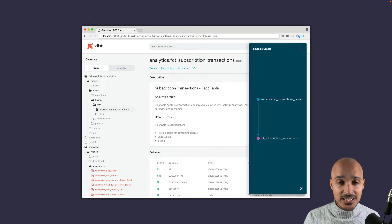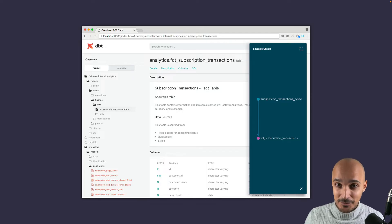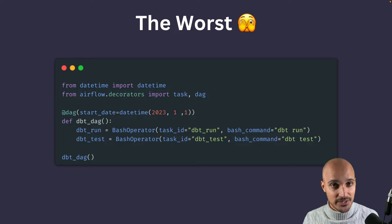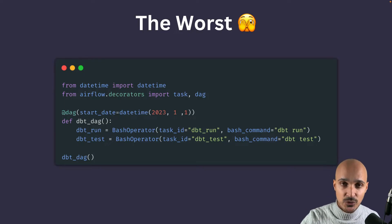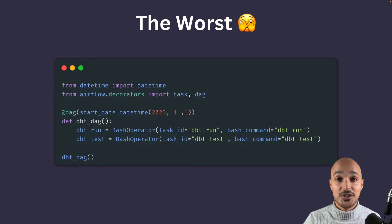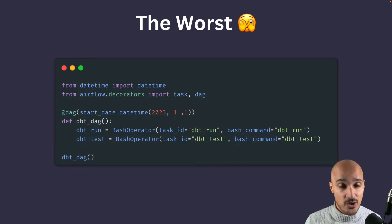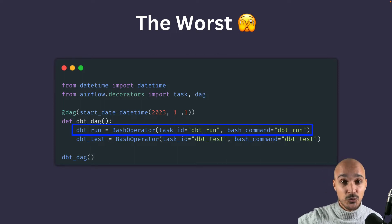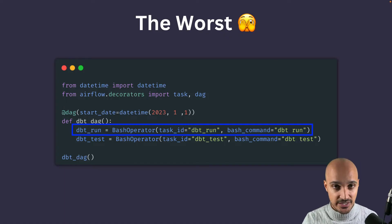Now let me show you the different ways of integrating DBT with Airflow. The first one, and maybe the worst one, is the one with the bash operator. You run DBT commands through the bash operator. You have to use it if you use DBT Core; if you use DBT Cloud, that's another story we'll see just after. With DBT Core, you have to use the bash operator, and there are many issues. By using the bash operator, you run the entire DBT project with the associated models and tests, which means everything is in a single task. And if that task fails, you have to rerun the entire DBT project, which can be costly.